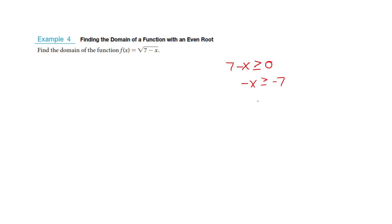I send the 7 over. Now I'm going to divide both sides by negative 1, and it's going to flip that inequality around. So in interval notation, I want all the x's less than or equal to 7. If you need the number line, draw it — totally fine. But in my head I see this is going negative infinity to 7. There's an equal sign, so I got a bracket. So that's my domain, written as negative infinity to 7 with a bracket.